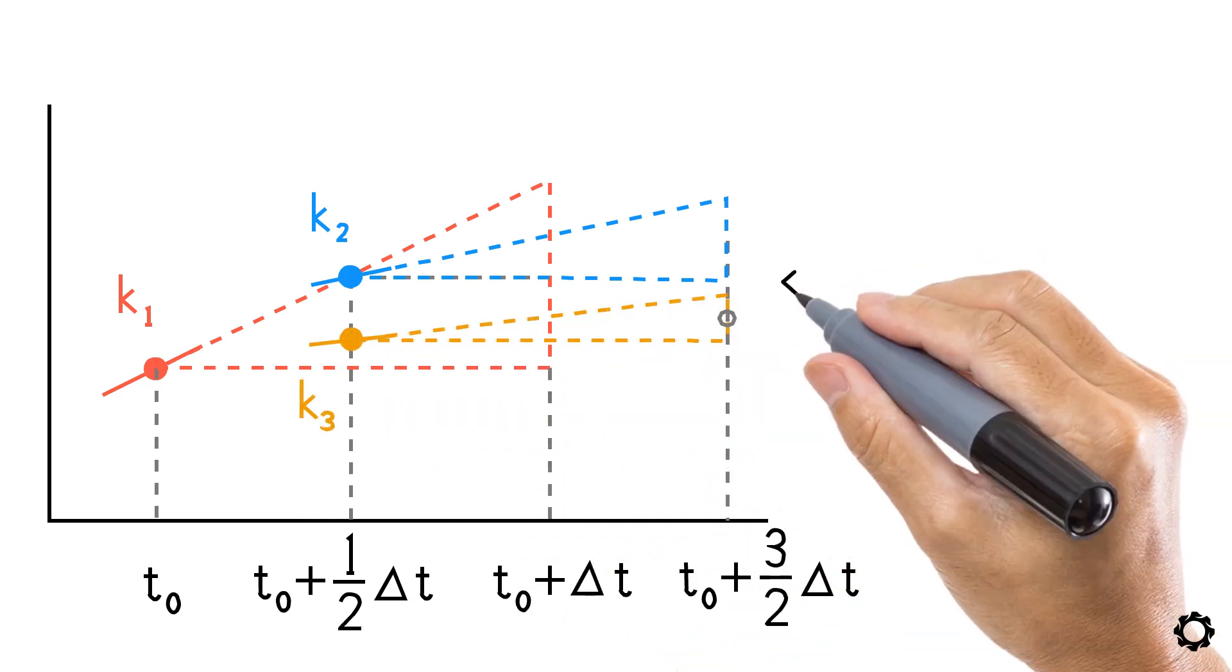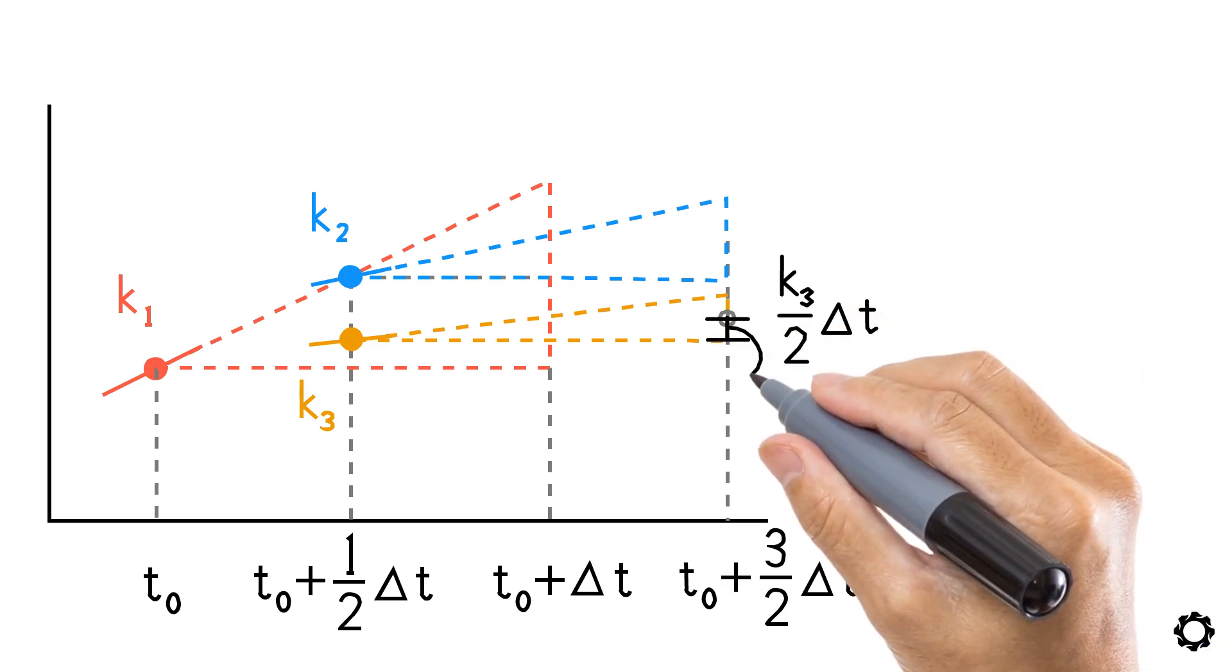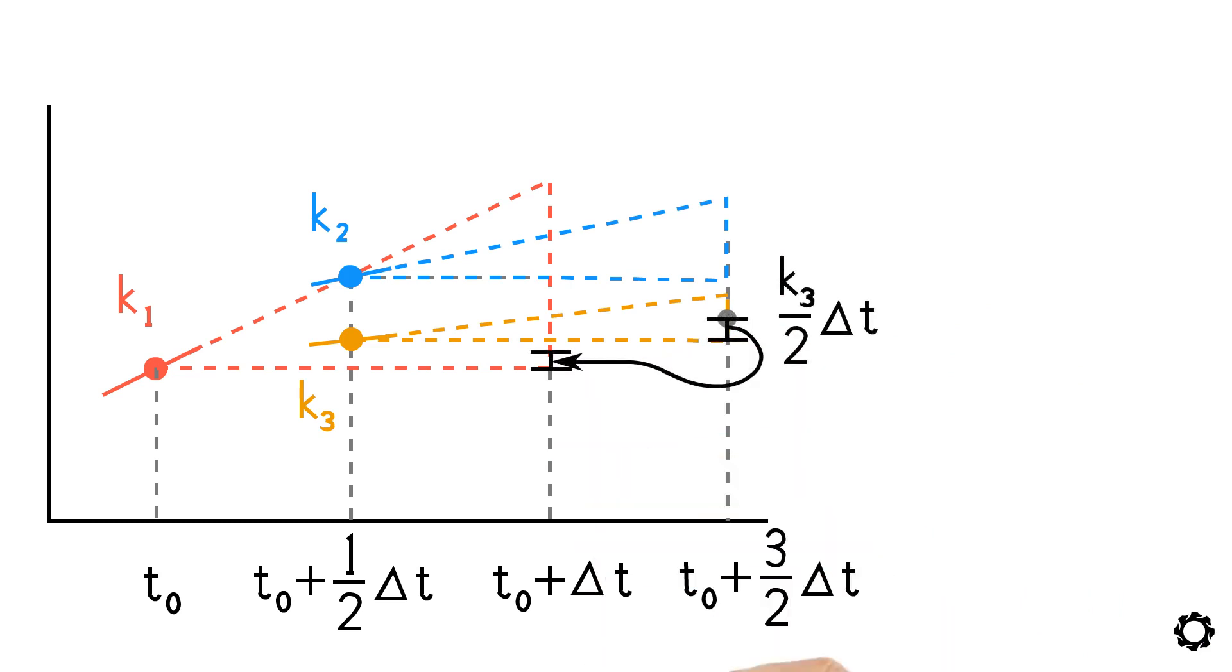After we find the length of half-height of the third triangle, we translate this height onto the base of the first triangle at the end of the first time interval and calculate the final slope, k4.